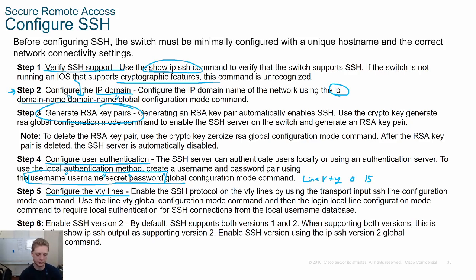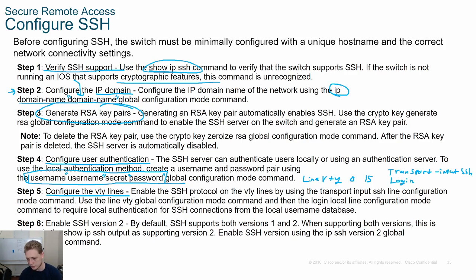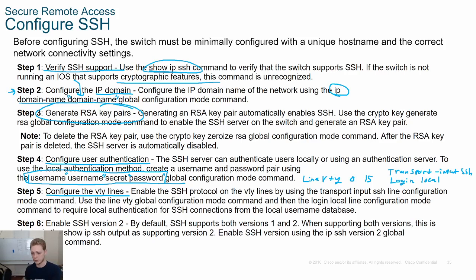Once inside the VTY line config, type 'transport input ssh' to deny Telnet connections and allow only SSH. Then type 'login local' to require username and password authentication. Note: if you type just 'login' without 'local', it will only prompt for a password, and SSH requires a username and password — so it won't work. Make sure you use 'login local'.